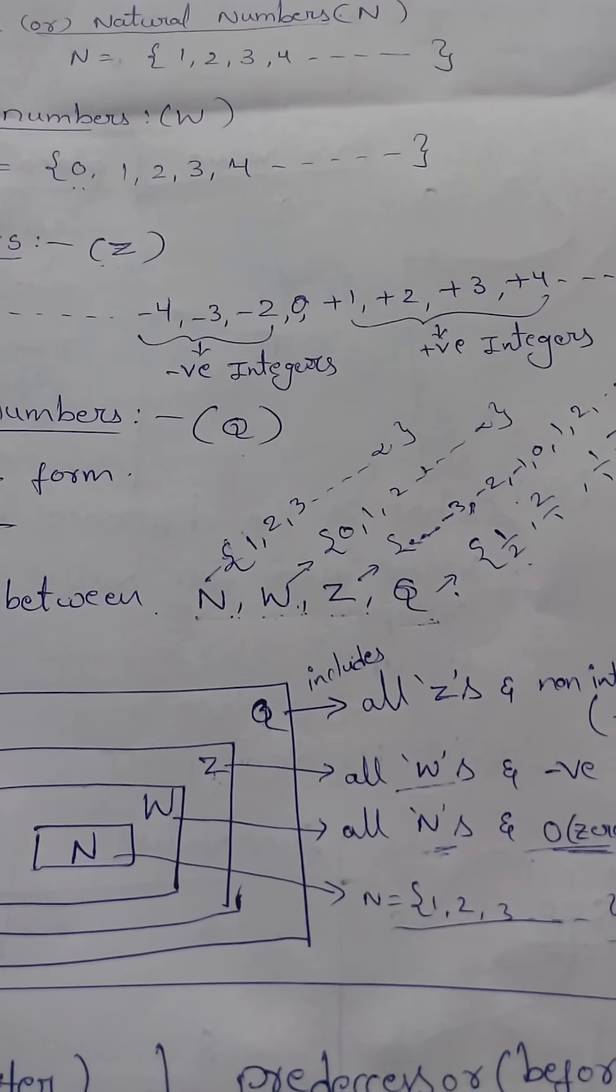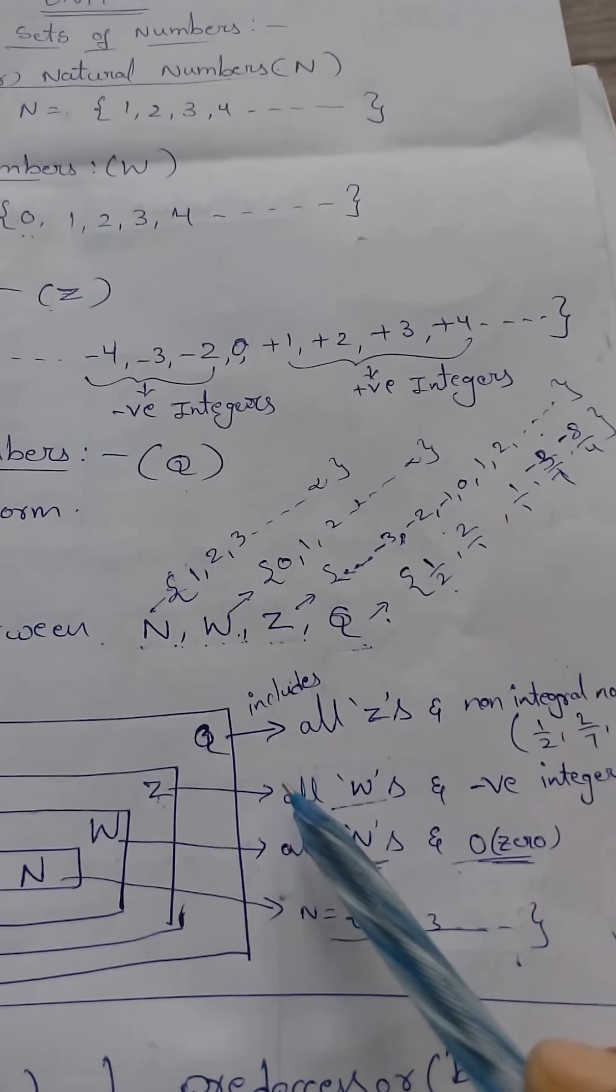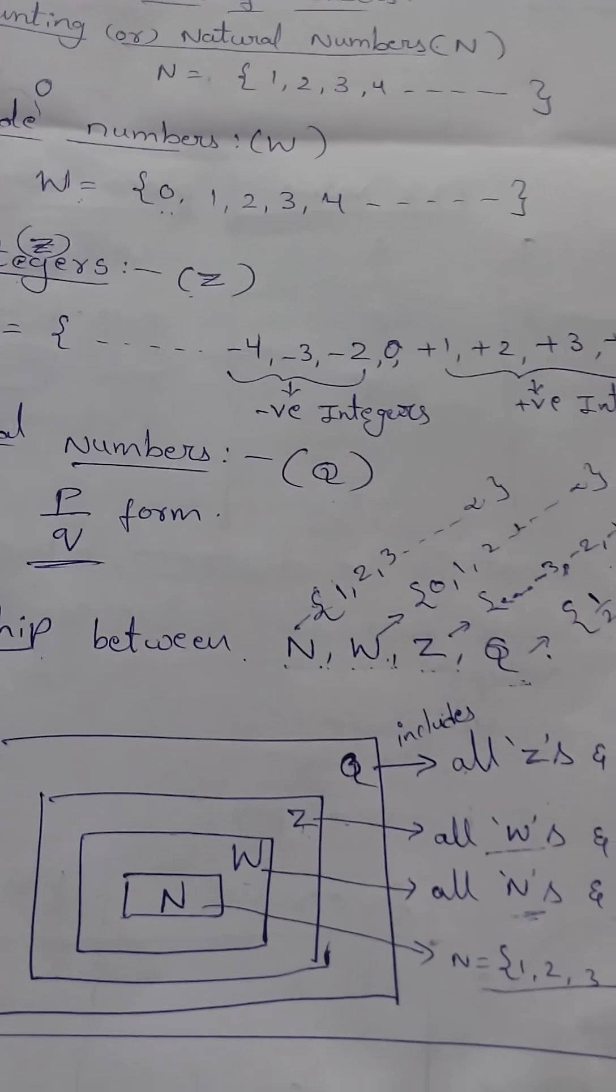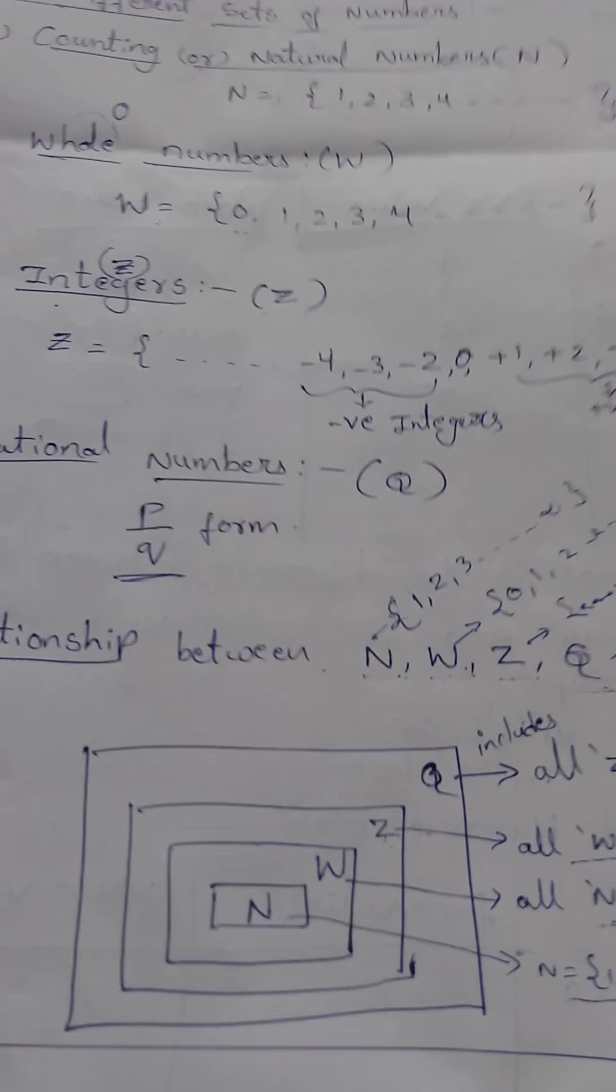N means all counting numbers starting from 1, 2, 3. I hope you understand the relationship between Q, Z, W and N friends. Thanks for watching. Thank you.